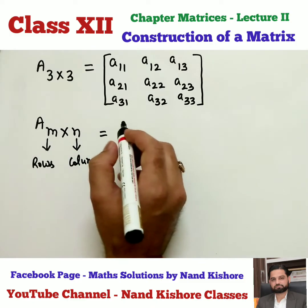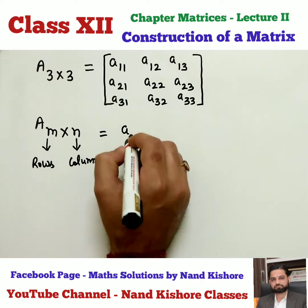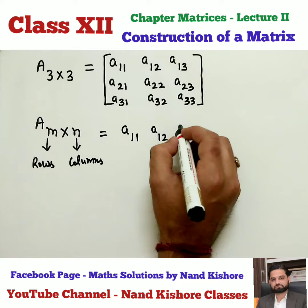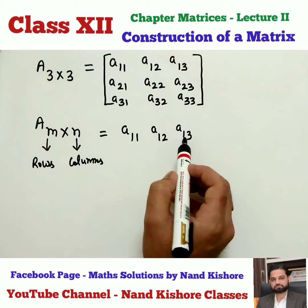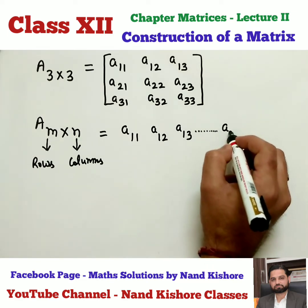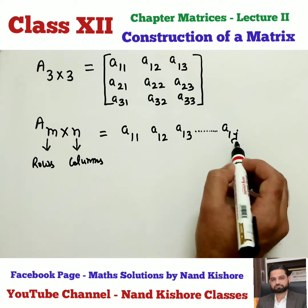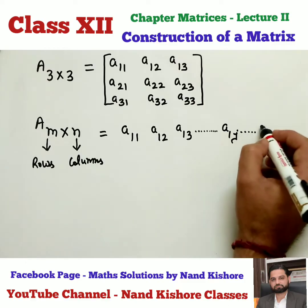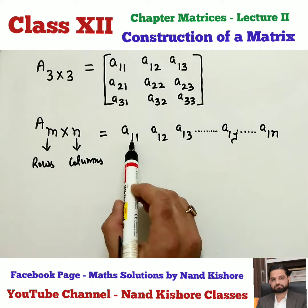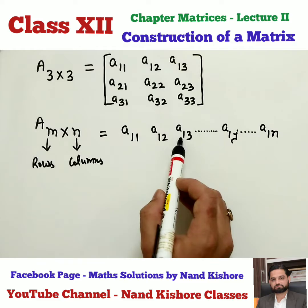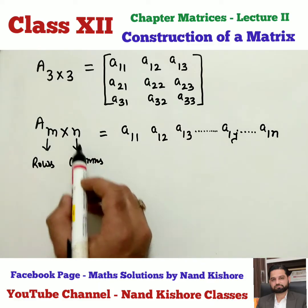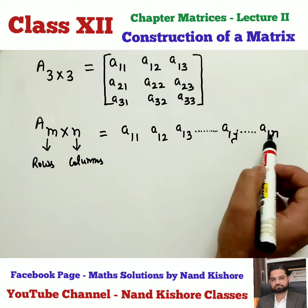Please have a look very carefully. First, we write A11, then A12, A13 — that means 1st row, 3rd column. Going in the same way, moving ahead, somewhere let's suppose the Jth column comes — J for Jack — and then moving ahead A1N. Now let's understand: 1st row 1st column, 1st row 2nd column, 1st row 3rd column, 1st row Jth column, and 1st row Nth column. Why till Nth? Because total number of columns are N, that is why till Nth column we will write it.